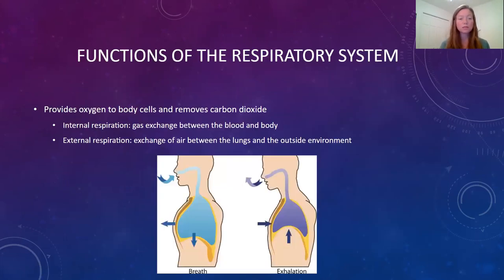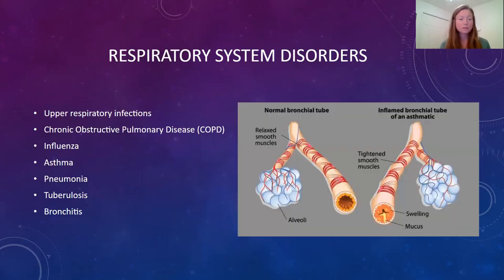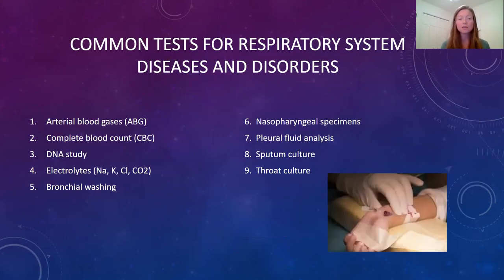Some common respiratory disorders include general upper respiratory infection, chronic obstructive pulmonary disease or COPD — which includes both chronic emphysema and chronic bronchitis — asthma, pneumonia, tuberculosis, and cystic fibrosis. Many common tests for the respiratory system can be found on table 5-5, page 97. These tests help diagnose a variety of things such as general respiratory infection, COPD, flu, RSV, and different types of lung cancers.